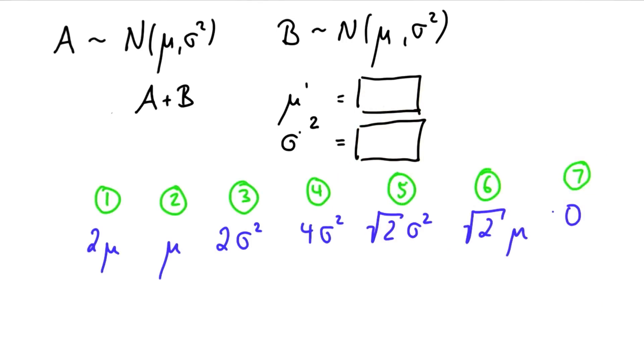And as before, I give you a number of possibilities. So there are seven options in total, from 2 mu all the way to 0.